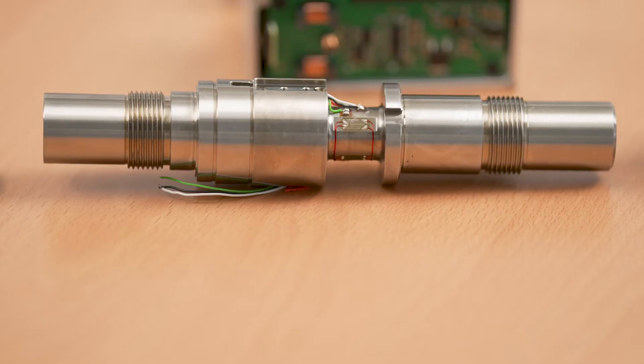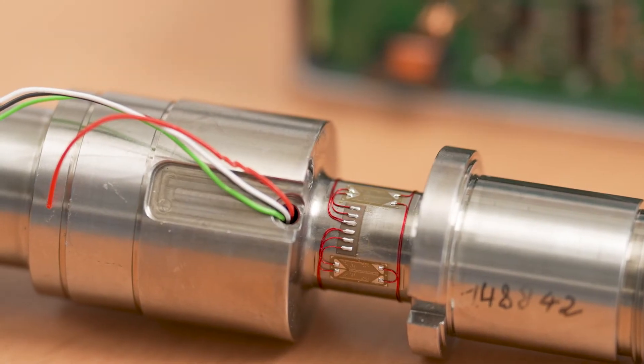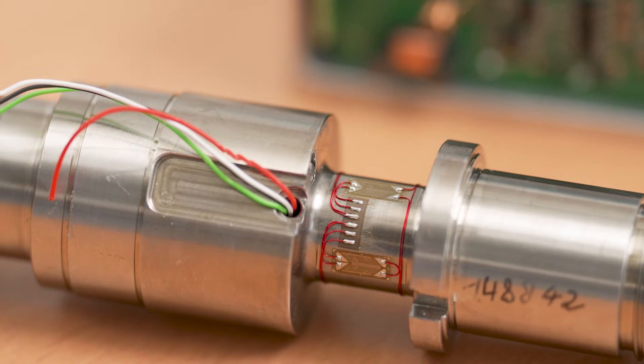Four strain gauges are bonded to the so-called torsional track, which are interconnected to a Wheatstone measuring bridge.